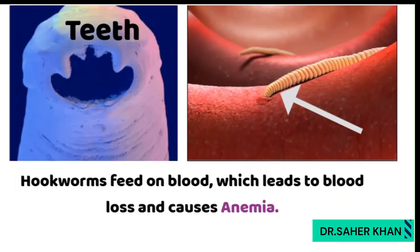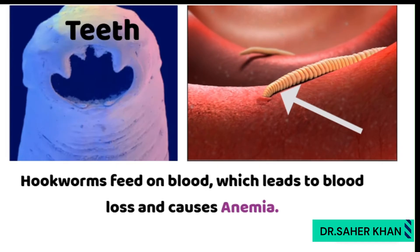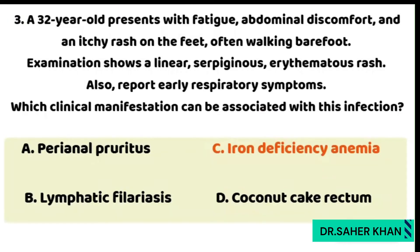As the name suggests, hookworms have hook-like teeth in their mouth which they use to attach to the human intestine, and they perforate the mucosa leading to internal bleeding. Over time, this chronic blood loss results in iron deficiency anemia. So the correct answer here is iron deficiency anemia.